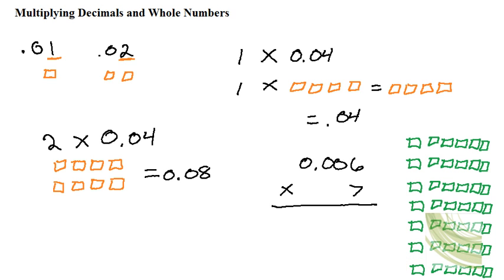If you were to count all of those up, there's six of them here, and there's seven rows. So it would be six times seven. And remember, each of these little boxes is actually one one-thousandth.